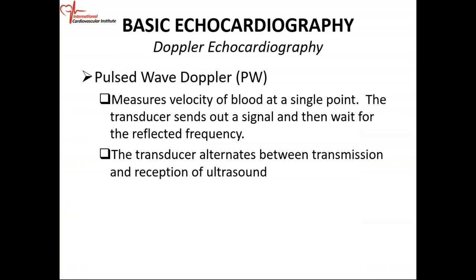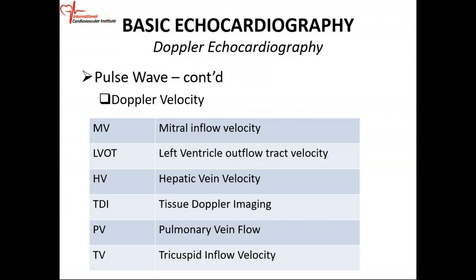Because it's sending out signals and waiting for the signal to come back, it can only measure low velocity signals. These are the different types of flows, movements, or velocities that pulse wave can measure — low velocity signals. The mitral inflow: blood travels from the left atrium across the mitral valve into the left ventricle. That's a normal flow of blood, and we use pulse wave to measure the velocity of that movement.